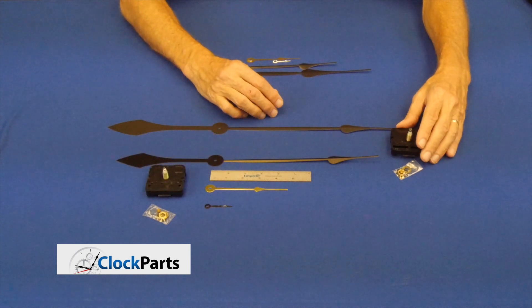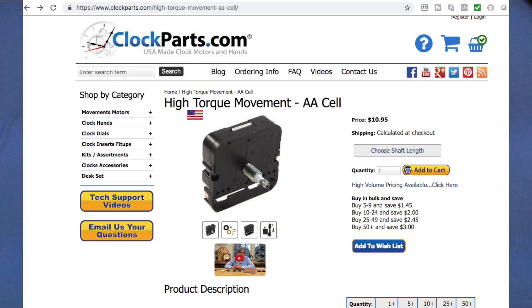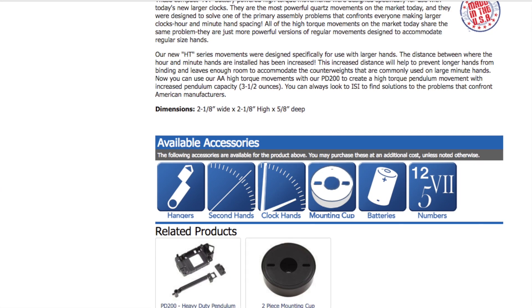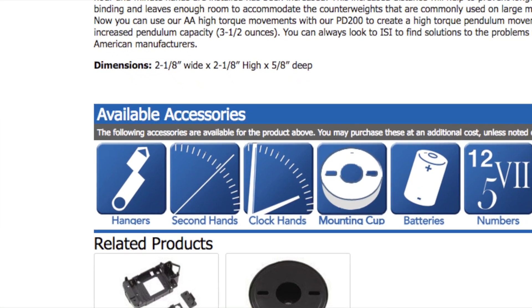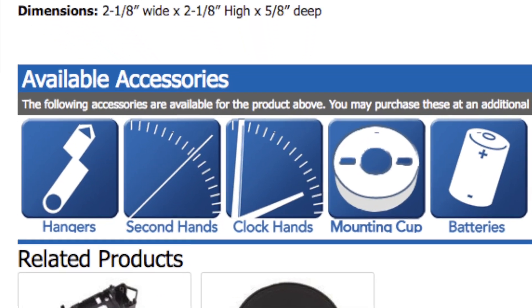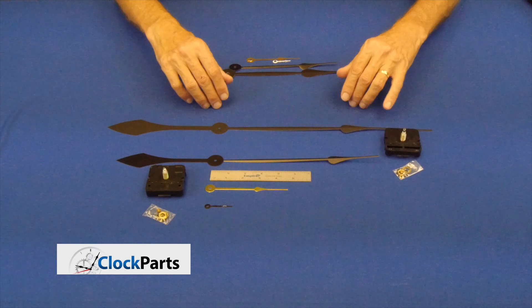Now, the high torque motors, this is a high torque AA cell. If you go to the bottom of that page, there's an icon there where you can select the hands you want for your high torque motor. And they're priced individually depending on the length of the minute hand you need.